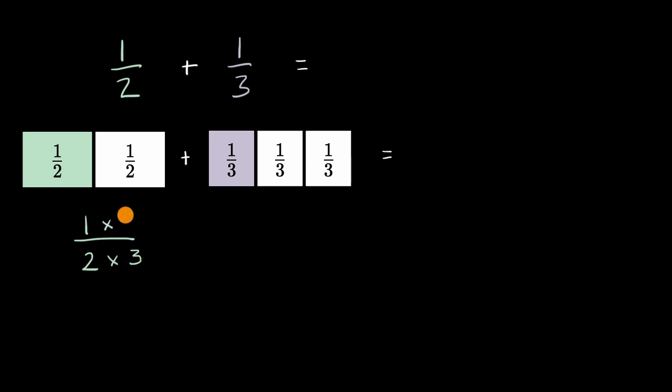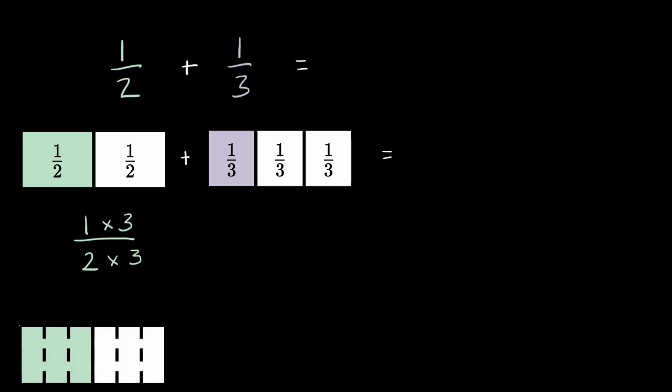And to see why that makes sense, think about this. So this, what we have in green, is exactly what we had before. But now by multiplying the numerator and the denominator by three, I've expressed it into sixths. So notice, I have six times as many divisions of the whole bar.